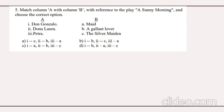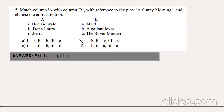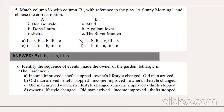Question number five: match column A to B with reference to the play 'A Sunny Morning.' The answer is option B. Don Gonzalo is a gallant lover, Don Laura is a silver maiden, and Petra is referred to as a maid. Question number six: identify the sequence of events which made the owner of the garden lethargic in the story 'The Gardener.'